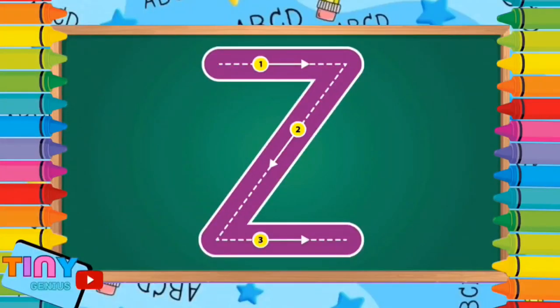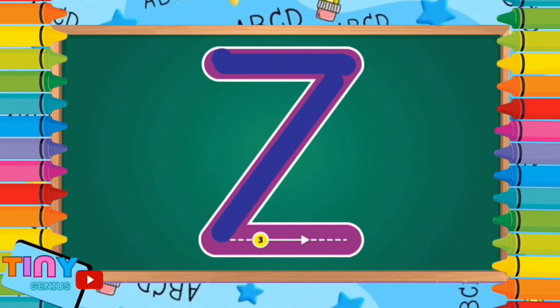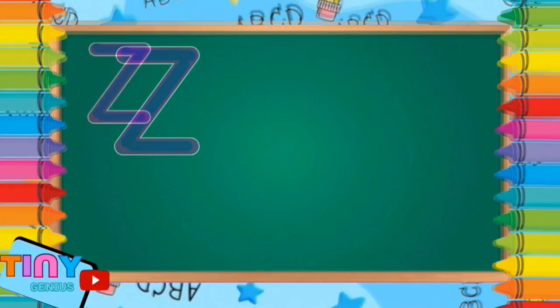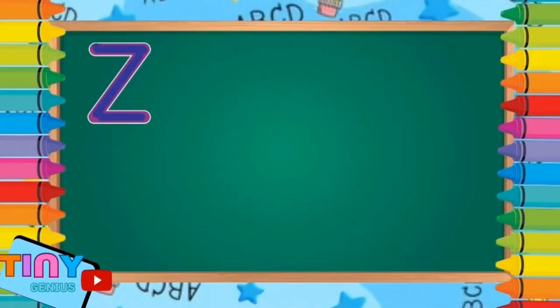Finally, the last letter, the letter Z. Across, slant down, across. Z is for zebra.